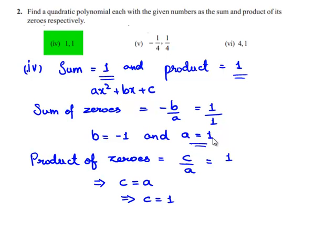Finally, A = 1, B = -1, and C = 1. Let us substitute the values of A, B, and C in the polynomial Ax² + Bx + C. Then we will get x² - x + 1. Hence, the required quadratic polynomial is x² - x + 1.